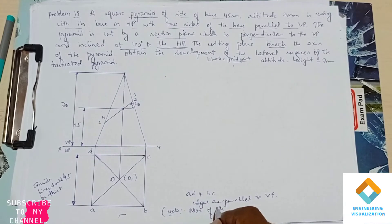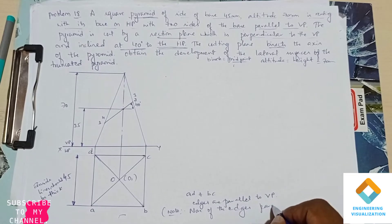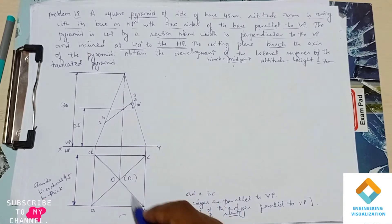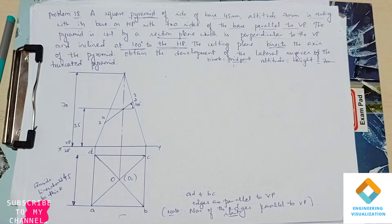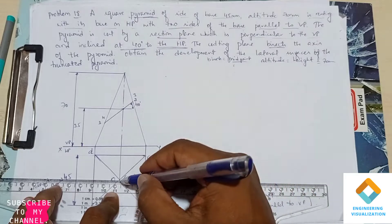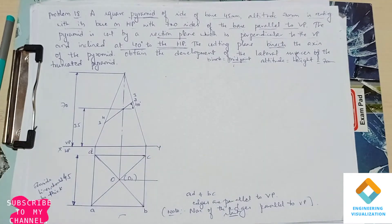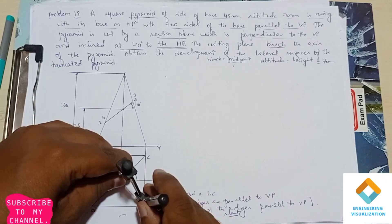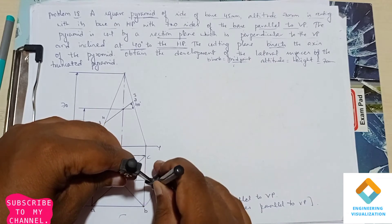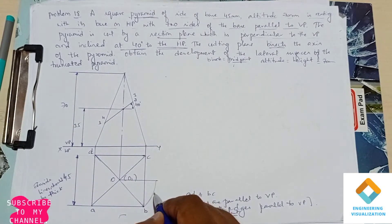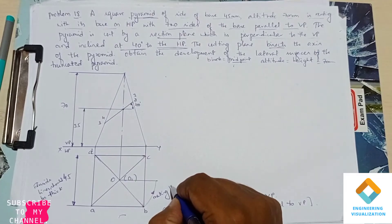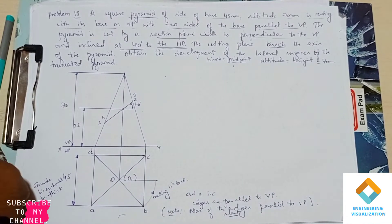None of the slant edges — AO, BO, CO, or DO — are parallel to the XY line or to the VP plane. So we need to take one of the slant edges and make it parallel to the XY line. Take the compass, draw a horizontal line, and measure the length of slant edge BO, making it parallel to XY.